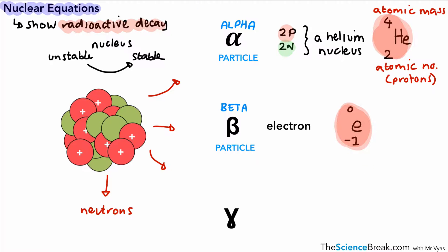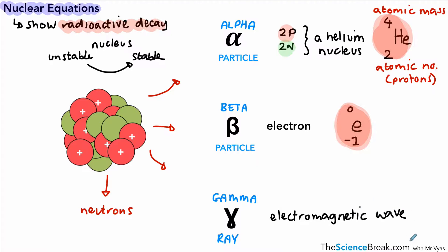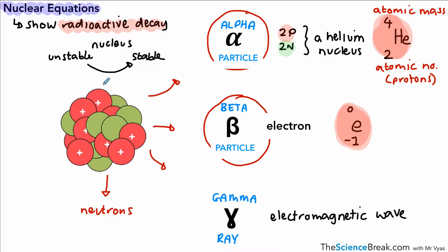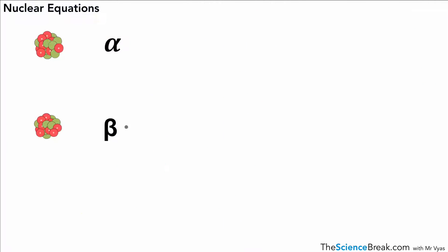In terms of our gamma ray or gamma wave, this is not actually a particle — it is electromagnetic radiation. You may have learnt about this when studying electromagnetic waves or the electromagnetic spectrum; if not, we'll cover that in a future video. We're going to focus on the beta particle and the alpha particle, and how they change the nucleus and the element after radioactive decay.